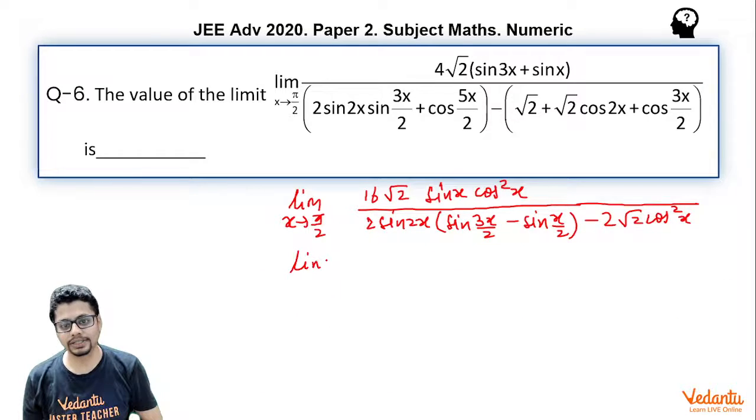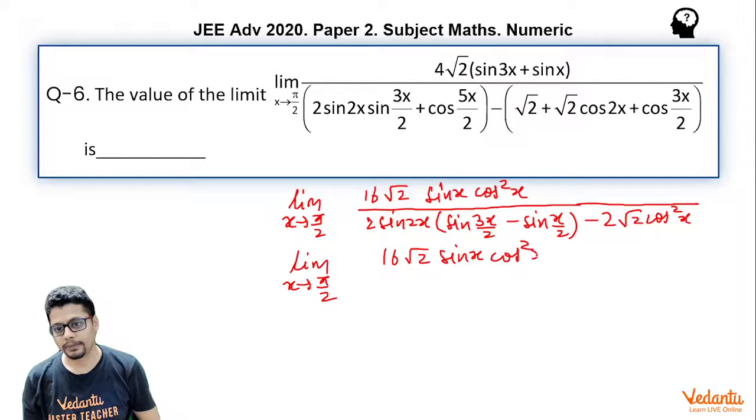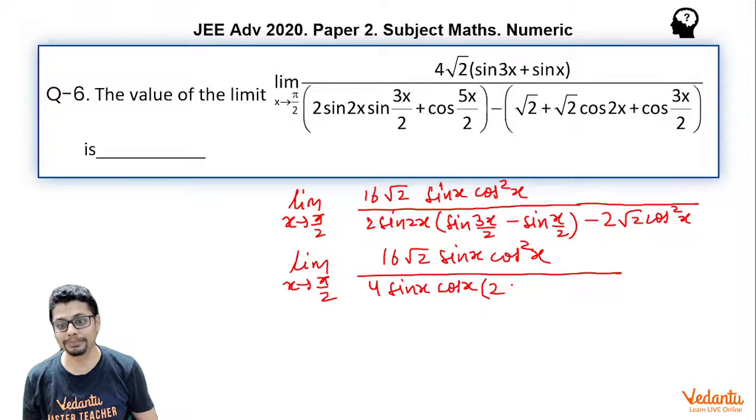Now I can further change the denominator as sin 2x I write as 2 sin x cos x. So it becomes 4 sin x cos x and sin c minus sin d is 2 sin((c-d)/2) cos((c+d)/2). And this term I will leave as it is.